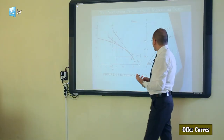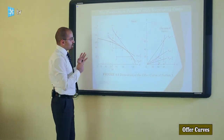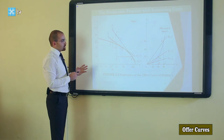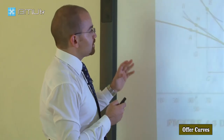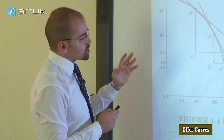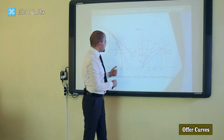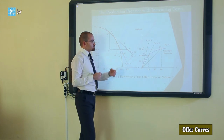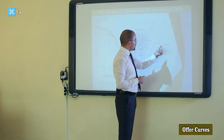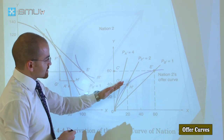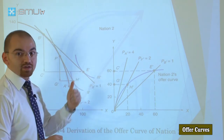We can apply the same approach for nation 2. The result is the same type of curve, but in the opposite direction. When relative price equals 1, 2, or 4 for nation 2, the slopes of those lines will be higher than in the previous graph.